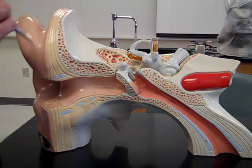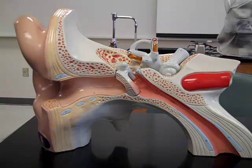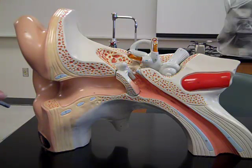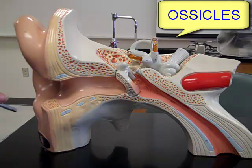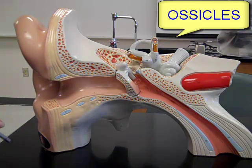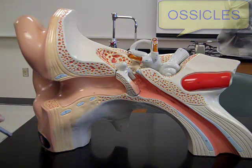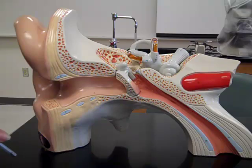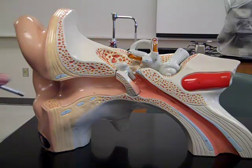Within the middle ear, we have a series of bones. There are three bones, and when we talk about all three together, we call them the ossicles. 'Oss' means bone. But when we think about them individually, they're the malleus, the incus, and the stapes.